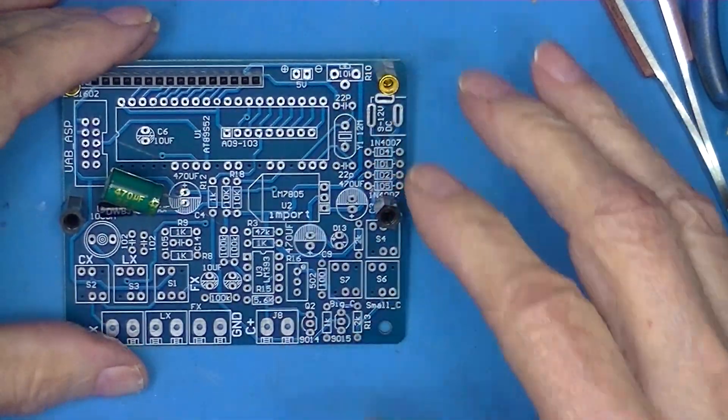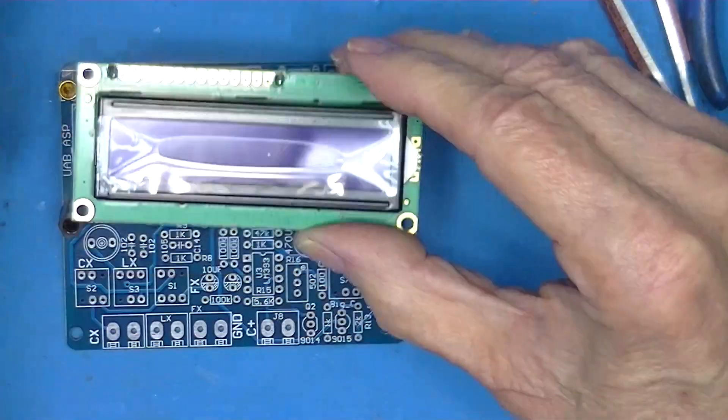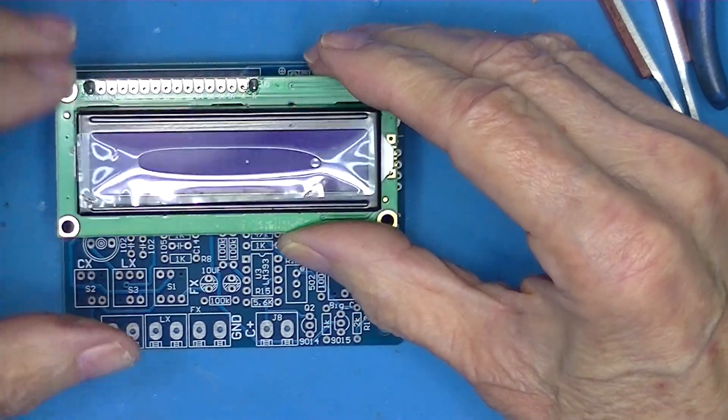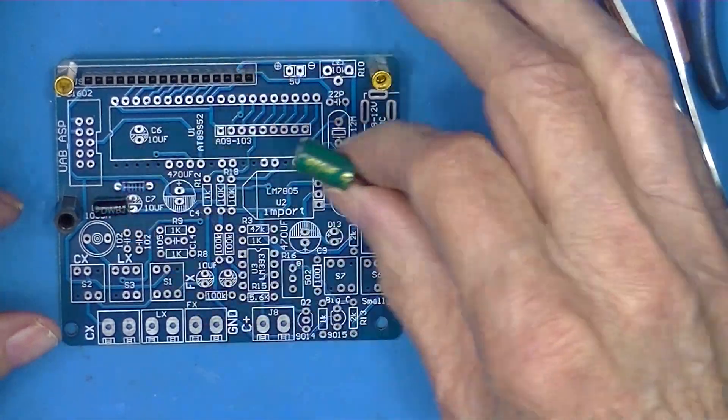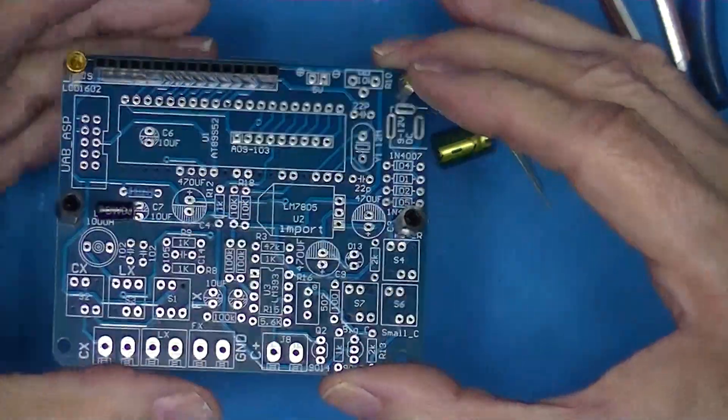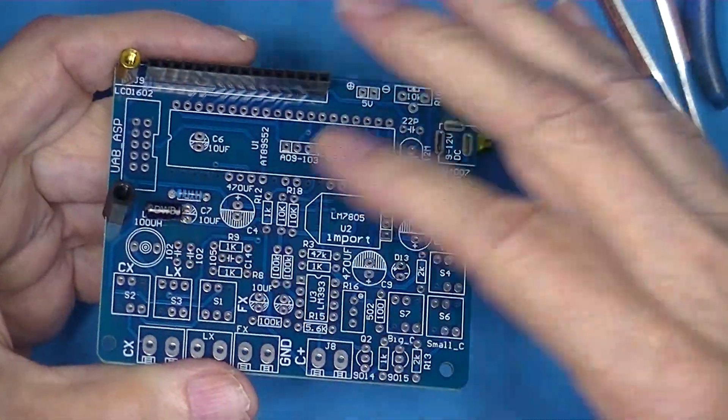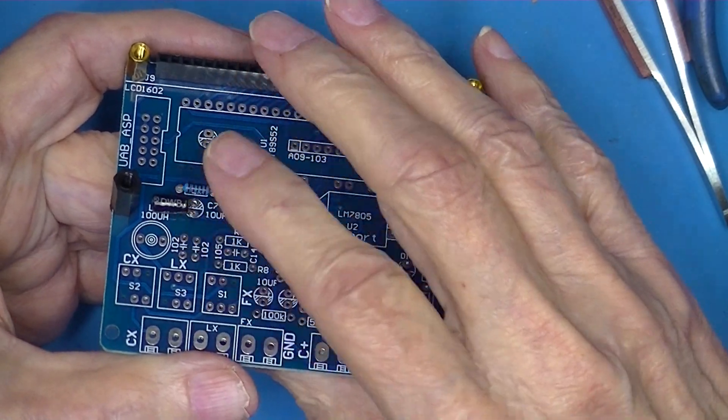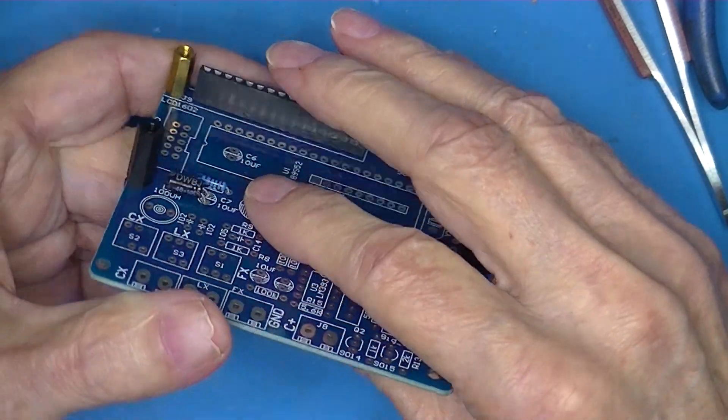The components underneath the display, which are here, well they're under here, they've got to be installed differently. For example, this capacitor in the videos you're going to watch is installed vertically, which is the way it was designed to be installed.